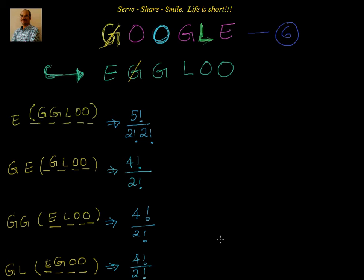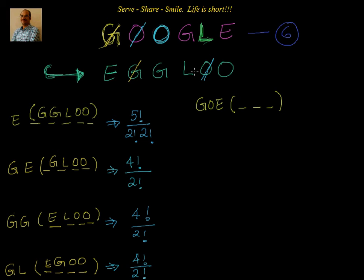Now all the words starting with G, L are over. We found them. Once G, L is over — we started with G, E; G, G; G, L — then we find G, O. Once I got G, O, I will cross O and go back to the starting point. So it is G, O and E. I have to see how many words I can form with G, O, E. G, O, E is fixed; I need to fill three more slots with G, L, O. There are no repetitions, so that is simply factorial 3.